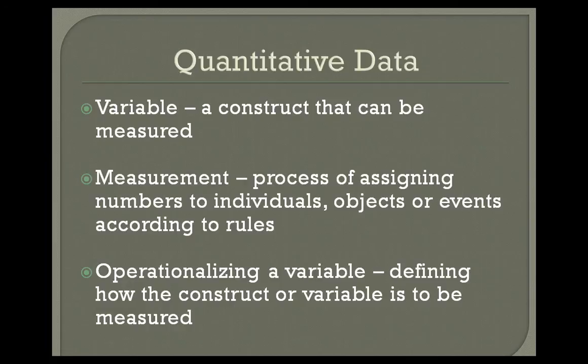Measurement is the process of assigning numbers to individuals, objects, or events according to rules. So if we're talking about my height, I am 5 feet 5 and a half inches. The way we assign this number — 65.5 inches — is by knowing the distance of 1 inch and then measuring the inches from the bottom of my feet to the top of my head. Operationalizing a variable means defining how the construct or variable is to be measured.